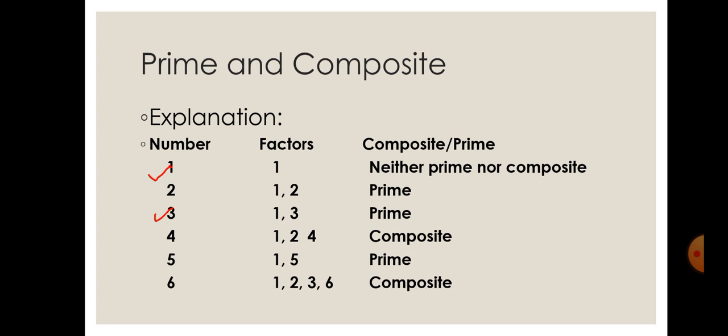For the number five, there are only two factors: one and itself. So once again, according to the definition of prime numbers, five is a prime number because it has exactly two different factors.